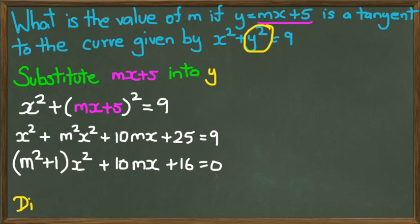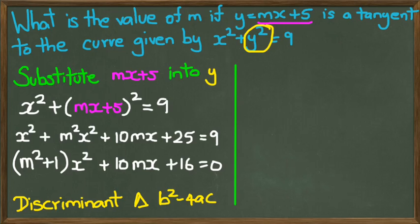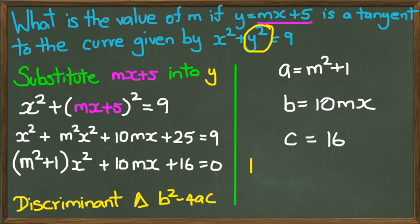Now, we're going to use the discriminant because we know that it's a tangent. And if it is a tangent, then b squared minus 4ac should equal 0. But let's actually figure out our three letters first. So a is going to equal m squared plus 1. b is going to equal 10m. c is going to equal 16.